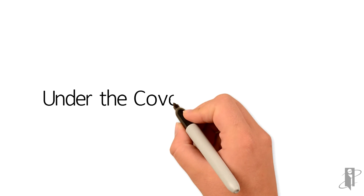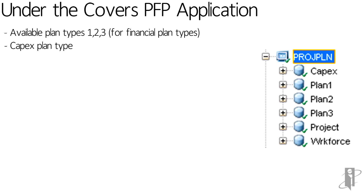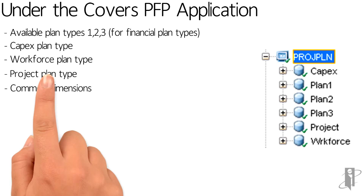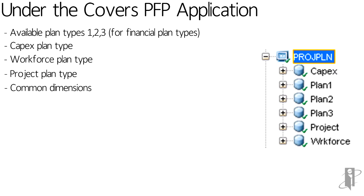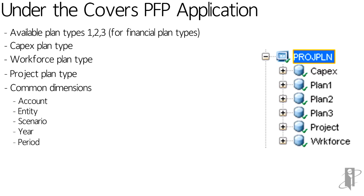Under the covers, what happens with a PFP application — and this is for the more technical folks — three plan types will be created to support the PFP functionality: a Project plan type, a CapEx plan type, and a Workforce plan type. You also have three other generic plan types that you could use for different requirements like revenue planning or a summary cube. Common dimensions shared across the plan types are the standard dimensions: account, entity, scenario, year, period, and version.